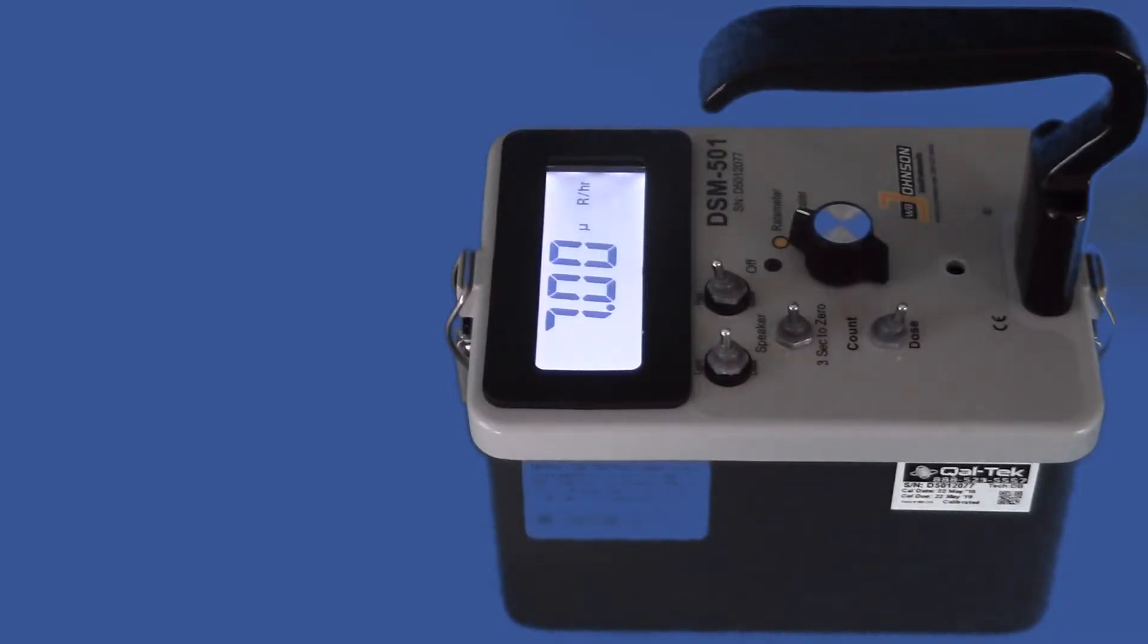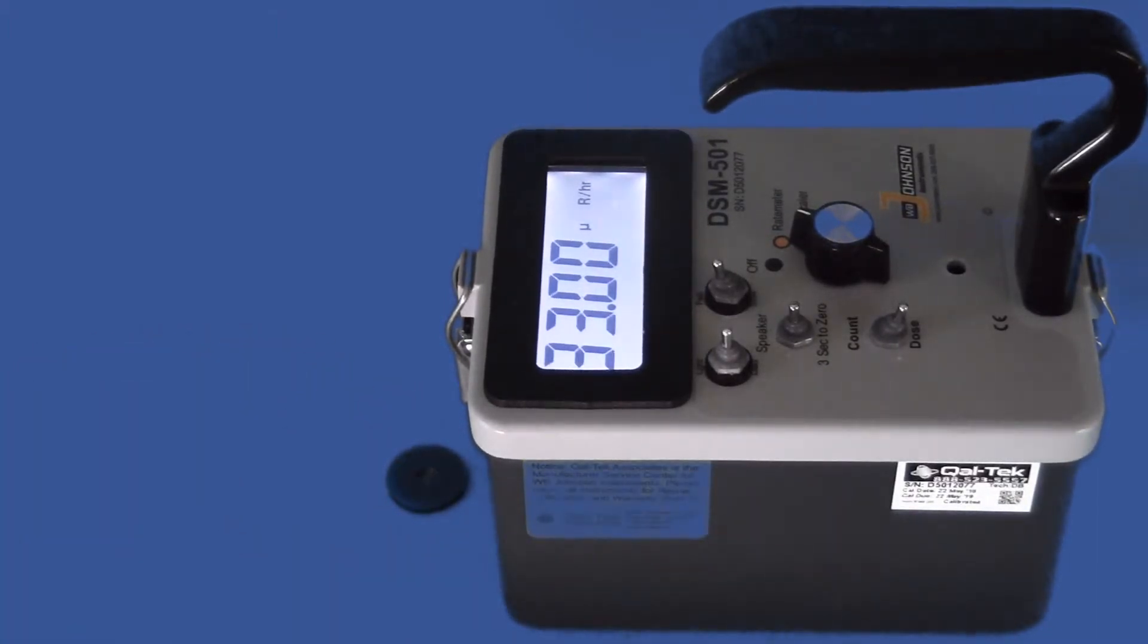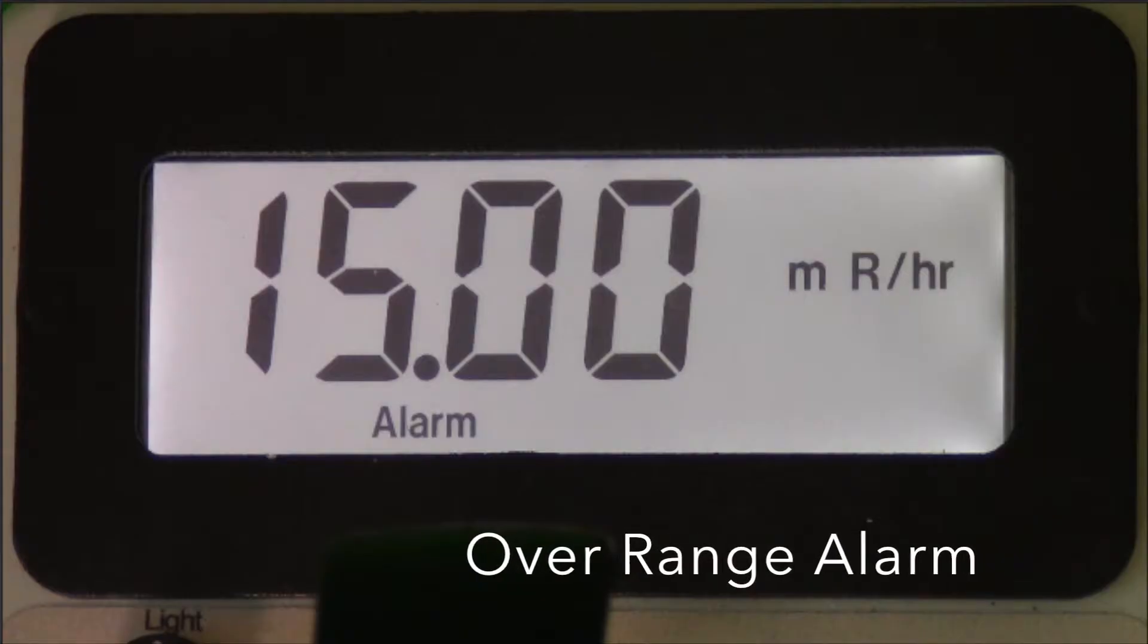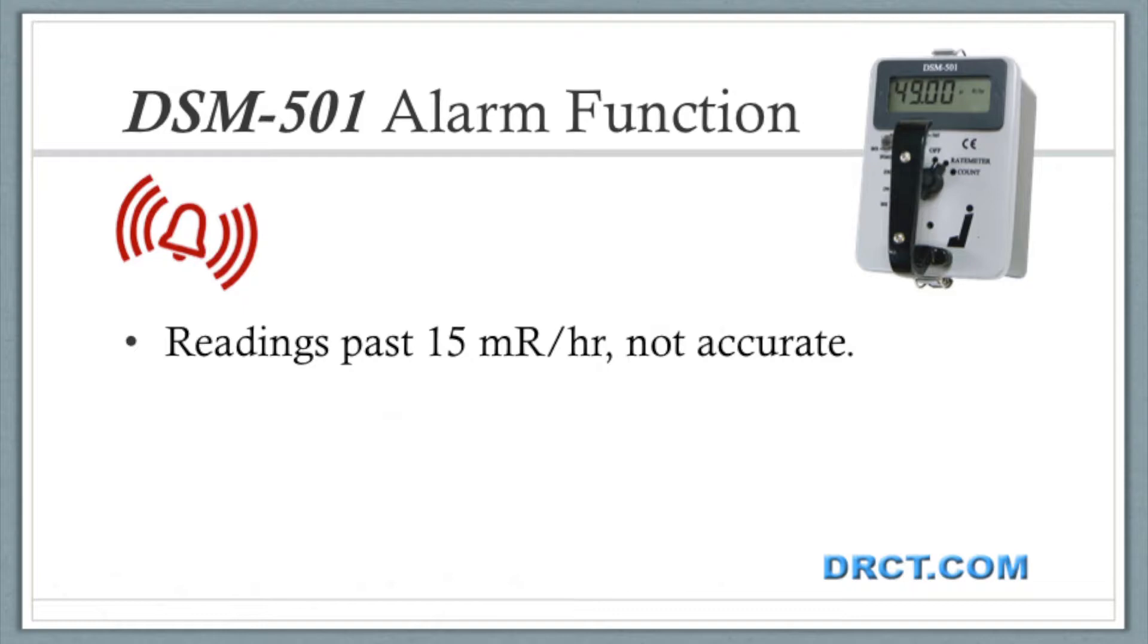We will now test the operational alarm with a weak 1 microcurie cesium-137 source. We won't test the overrange alarm because we don't have a source at hand with a high enough activity. Please note that with readings past 15 milliroentgen per hour, the results are not accurate.